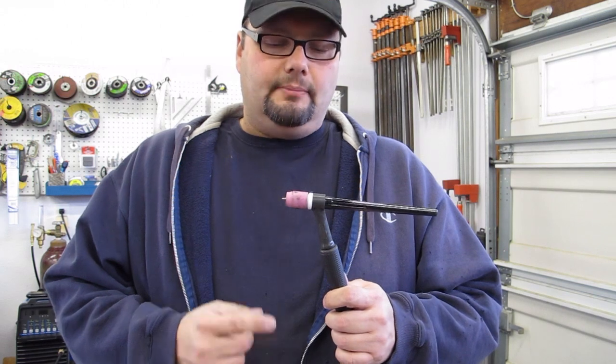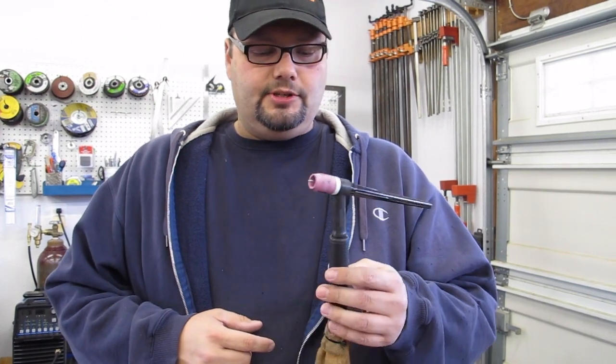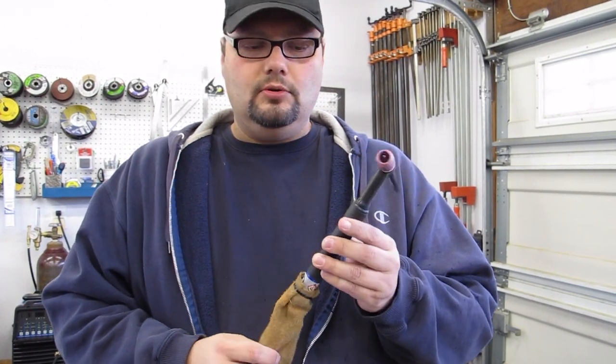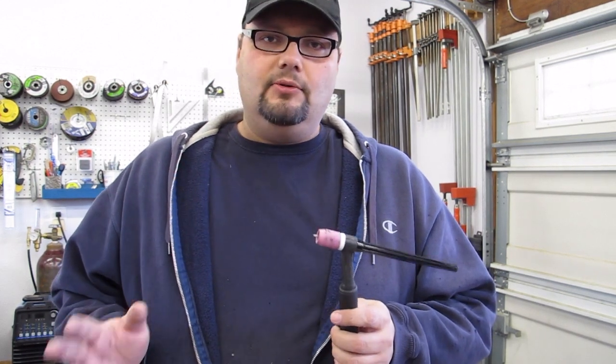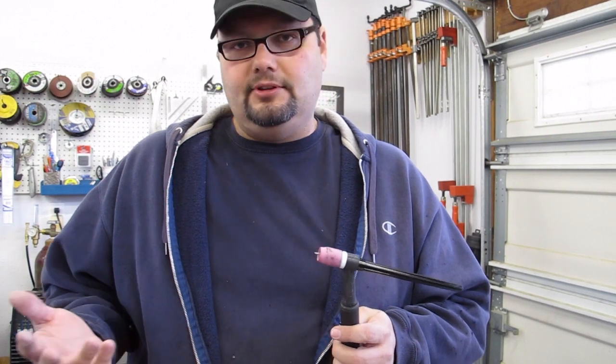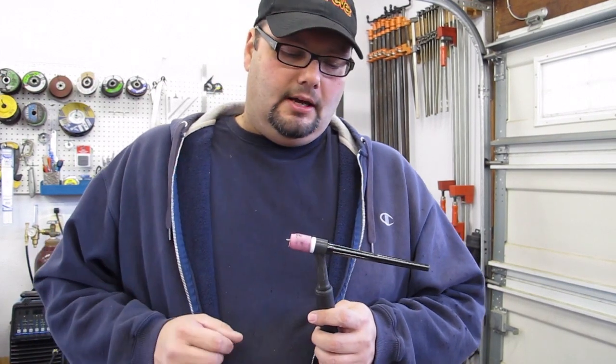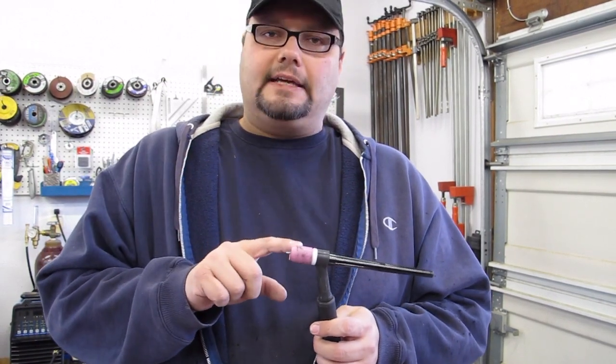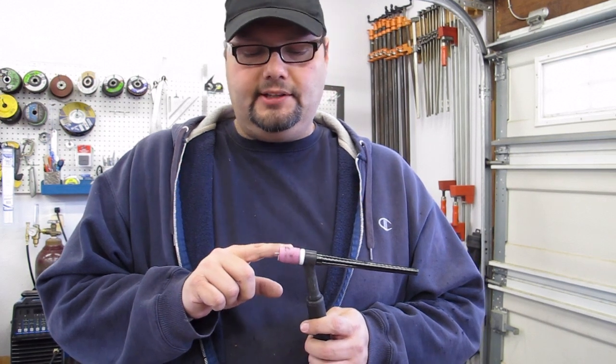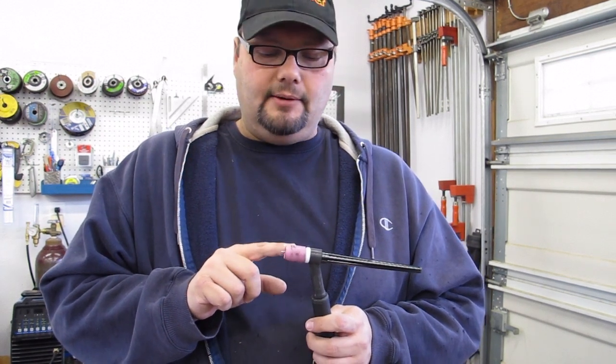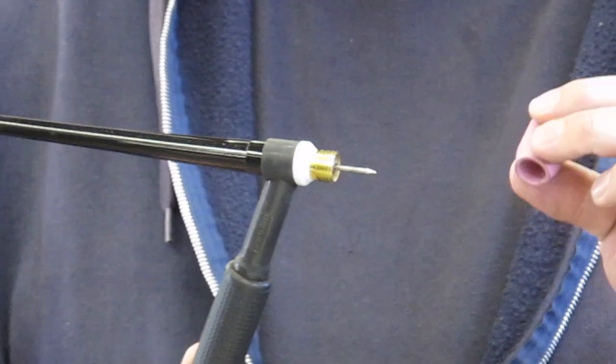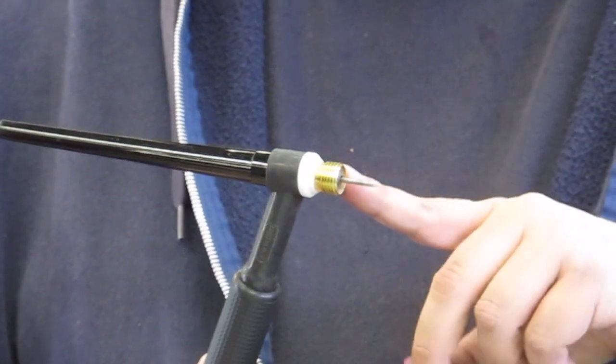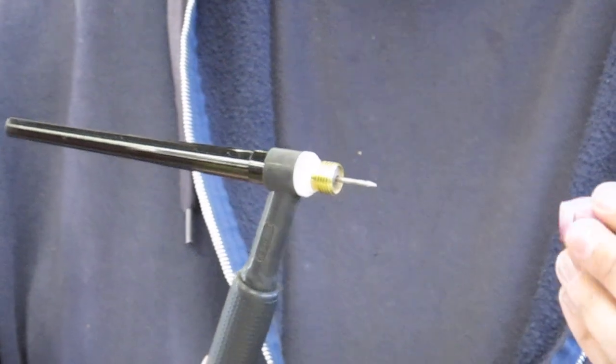Okay, I'm going to talk a little bit about the TIG torch. This particular one happens to be water cooled, however for this application at low amperage we really don't need that. It just so happens this is what's hooked up in my shop and so it makes it easier to use. The first thing I want to discuss is the cup. I don't think I've ever really seen anybody get into detail about the cup. Basically this is an alumina cup and it's meant to funnel the shielding gas out through from the collet body onto the molten puddle.